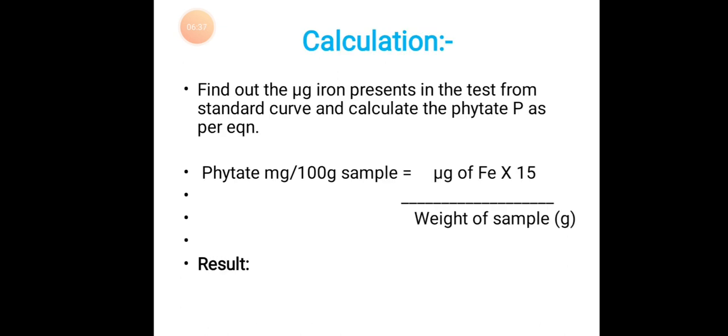Coming to calculation: Find out the micrograms iron present in the test from standard curve and calculate the phytate phosphate as per equation. Phytate mg/100g sample equals micrograms of Fe times 15 divided by weight of sample in grams. This gives the amount of phytate phosphate present in the sample.